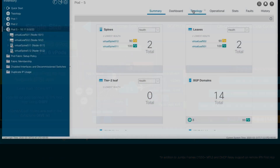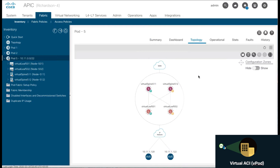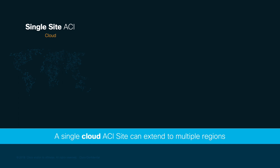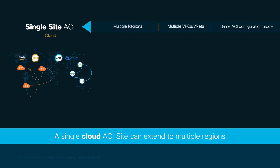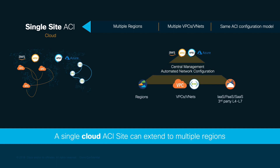As a result, we maintain our single APIC cluster managing virtual ACI pods. As of the recording of this video, you can scale up to six VPODs. Just as on-prem, we may also have cloud ACI deployments, where an APIC represents one or multiple cloud regions per cloud provider, automating connectivity between VPCs and VNETs for IaaS, PaaS, SaaS, and third-party services in the cloud. A single cloud APIC and all its regions can be considered similar to a multi-pod deployment in the cloud, since it is automating inter-region connectivity within the same cloud provider.